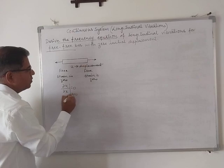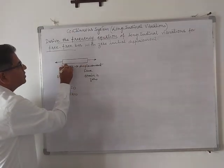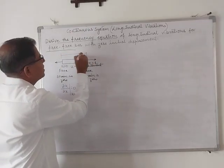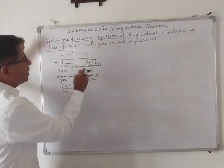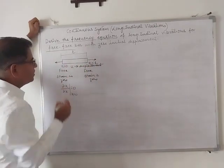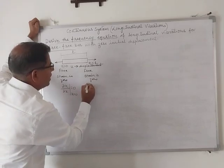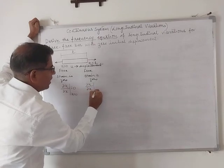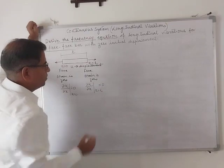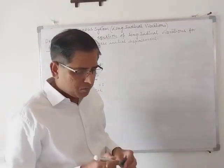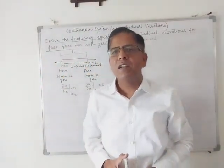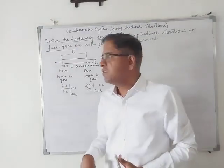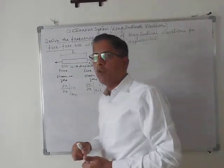Mathematically, ∂u/∂x = 0 at x = 0, because at this end the value of x is zero. At the other end, x equals the length L of the bar, and ∂u/∂x = 0 at x = L as well. These are the boundary conditions we need to apply to find the frequency equation for the longitudinal vibration.